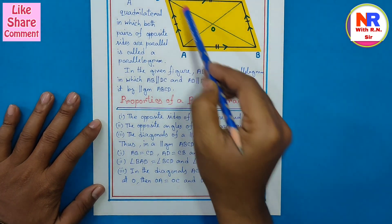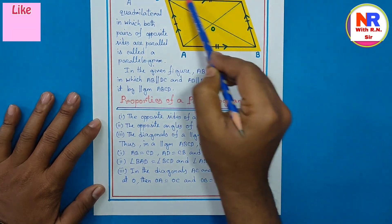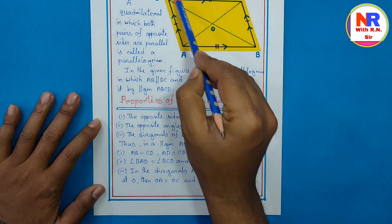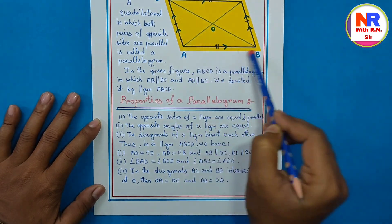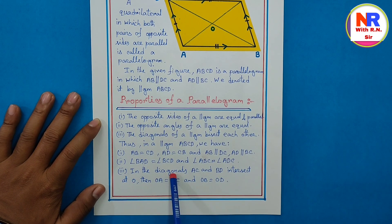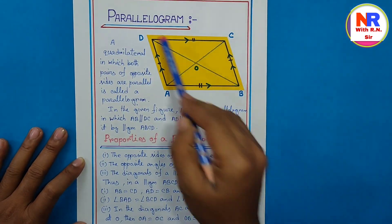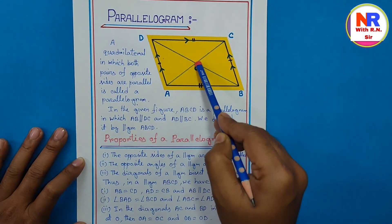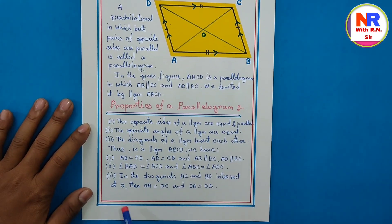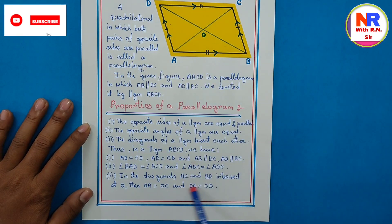Point 2: angle ABC equals angle ADC, and angle BAD equals angle BCD. Point 3: diagonals AC and BD bisect each other at point O, so OA = OC and OB = OD.